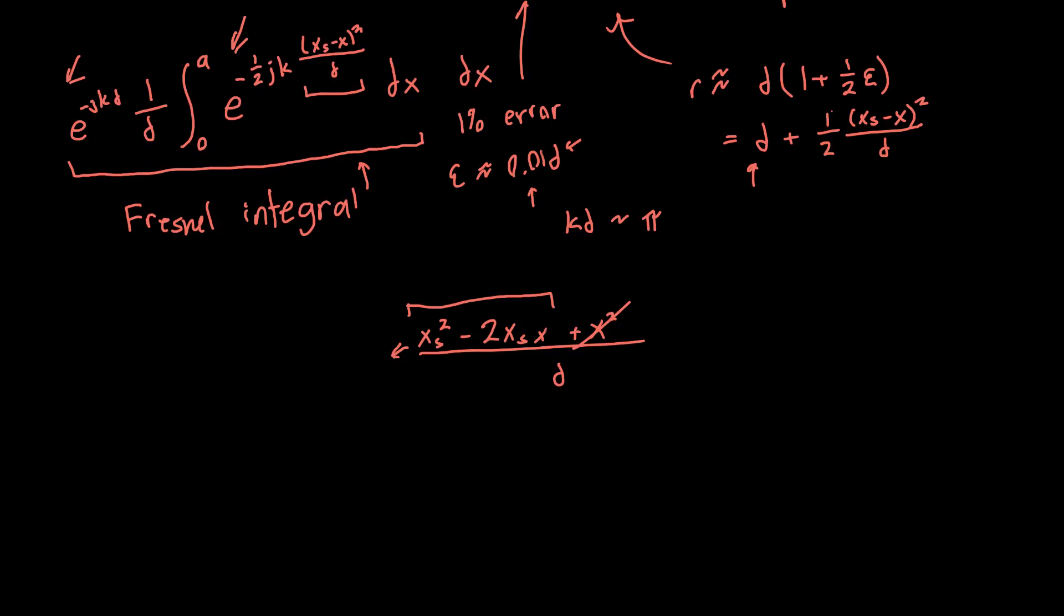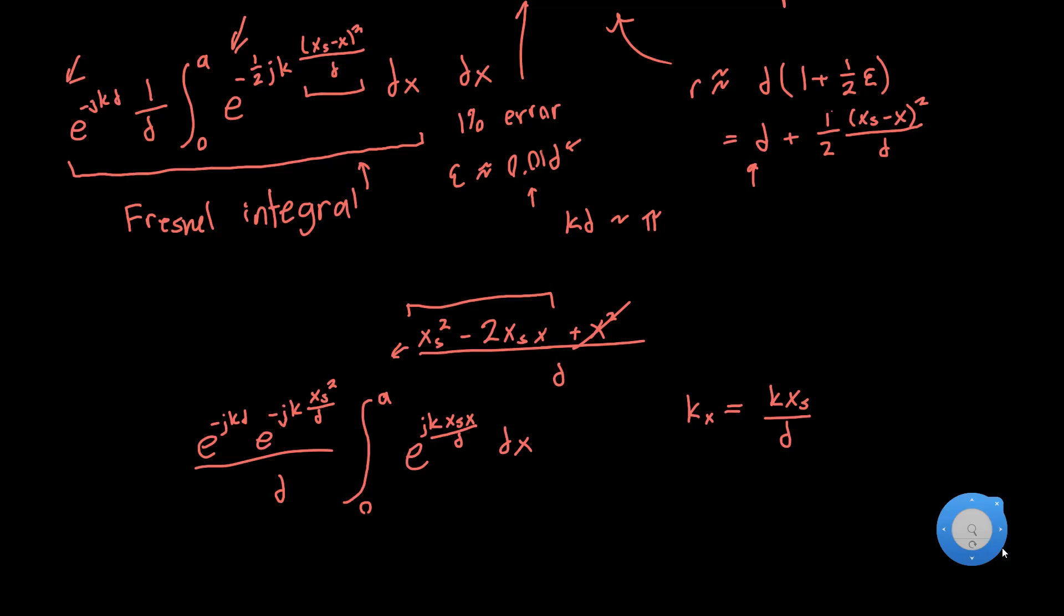And so let's plug in this now into the integral. So if we pull out the x_s squared term, we'll have e to the minus jkd, e to the minus jk x_s squared over d, and then this is all over d. And then we're integrating now e to the plus jk x_s times x over d, dx from zero to a. Now the last thing I'm going to do is I'm going to make a substitution k_x is equal to k times x_s over d. And this is just taking the x component of the plane wave hitting the screen.